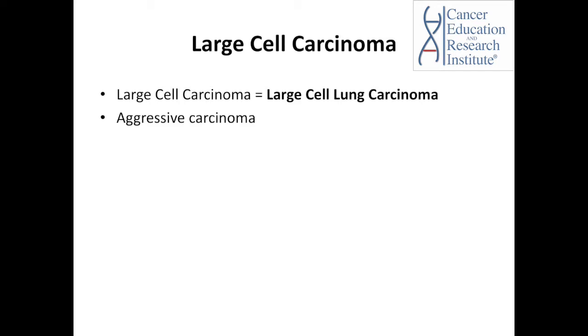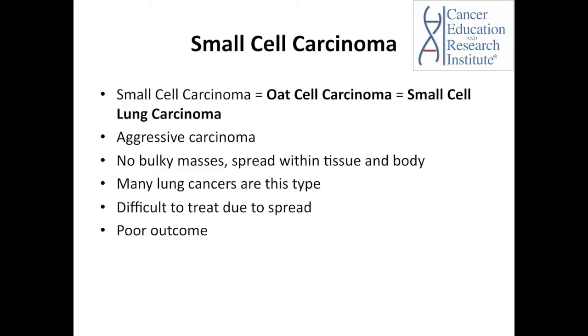There are also two types of carcinomas to mention here: large cell carcinoma and small cell carcinoma. These are more specific to the lung and will be covered in more detail in the lung cancer episode. Large cell carcinomas, also called large cell lung carcinoma, are an aggressive type. Small cell carcinoma, also known as oat cell carcinoma or small cell lung carcinoma, is also aggressive and usually occurs in the lung. Cancer cells of this type do not form bulky masses but rather spread within the tissue and body, making them very hard to treat with a poor long-term prognosis.